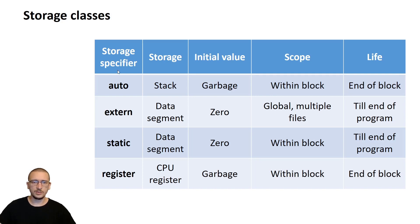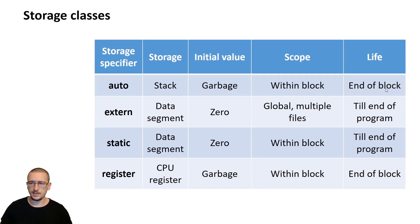Let's start with the first one: Auto. It will be stored on the stack of the program. The initial value will be a garbage one because it will be taken from the stack. The scope will be within a block and the life will be until the end of the block.